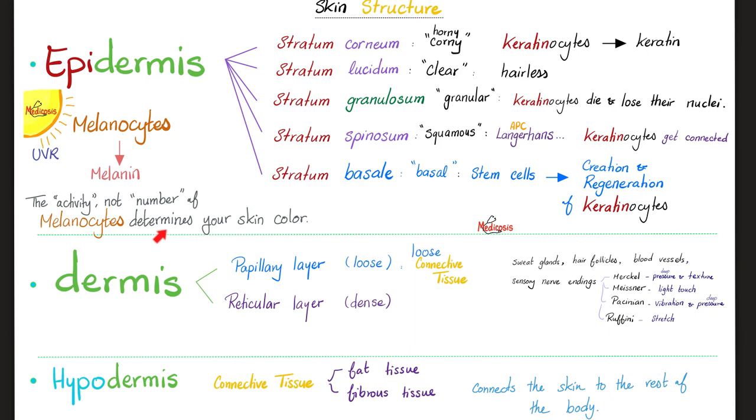These are the structures of your skin. Epidermis is here, dermis is here, hypodermis is here. Ectoderm, neural crest, mesoderm, mesoderm. Please pause and review. You need to know everything on this slide.